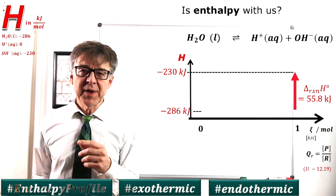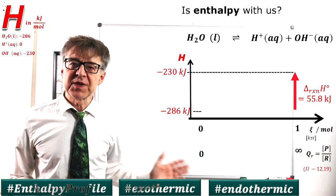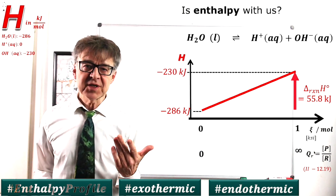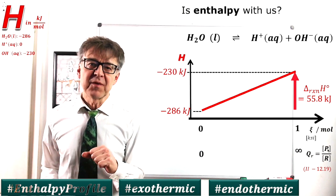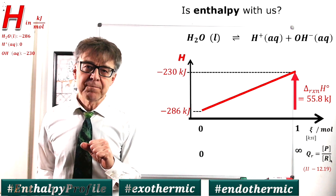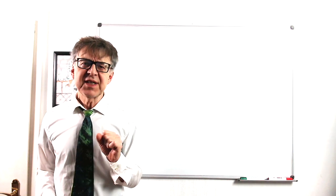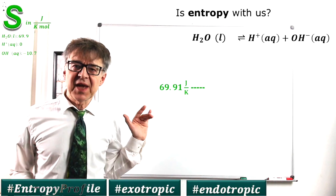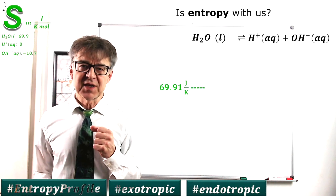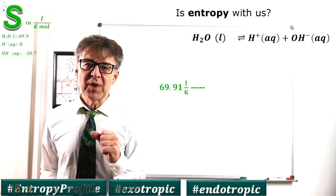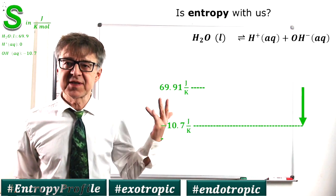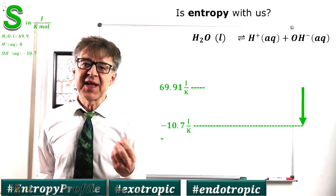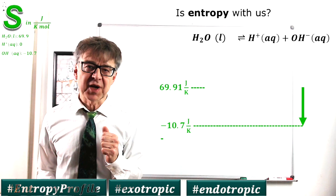Alternatively, we may also specify conversion using the reaction quotient, Q sub r, which is the quotient of the product concentration and the reactant concentration. Things look a little different with entropy. First of all, we can sketch in the entropy of the pure products and reactants. We start with relatively disordered water, 70 joules per kelvin and end up with the less chaotic ions, negative 11 joules per kelvin.